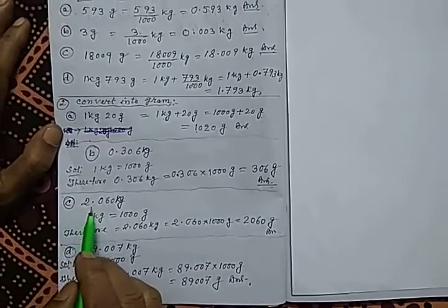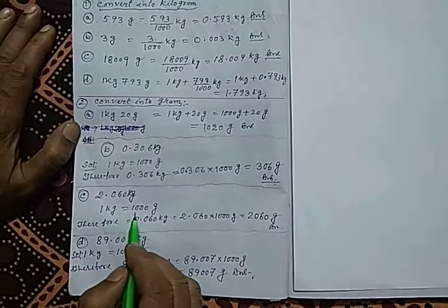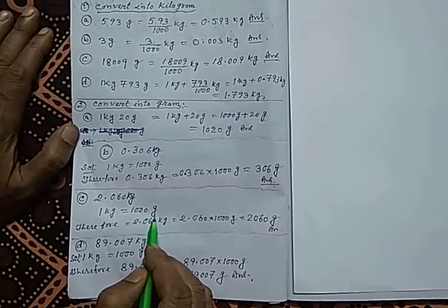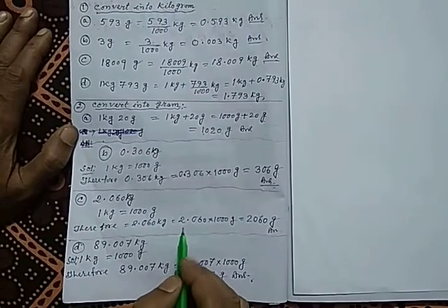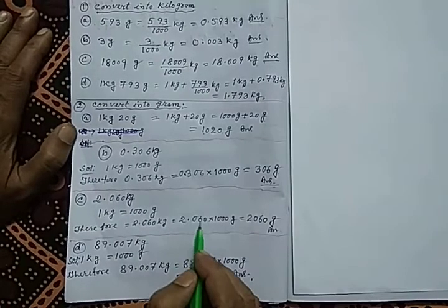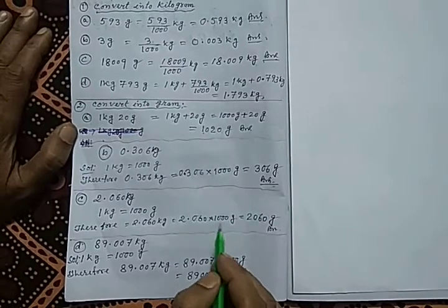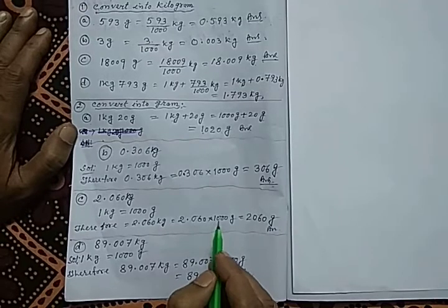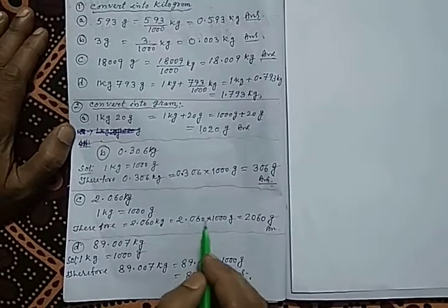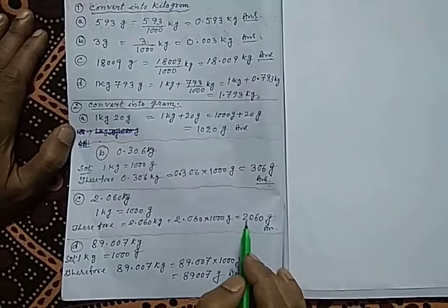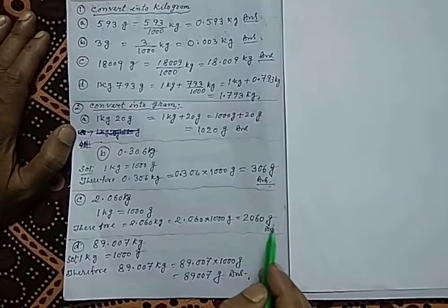In C, 2.060 kg is given. Since 1 kg equals 1000 gram, 2.060 multiplied by 1000 — when multiplied by 1000 it converts into gram. There are three zeros so the point shifts three digits to the right, giving the whole number 2060 gram.